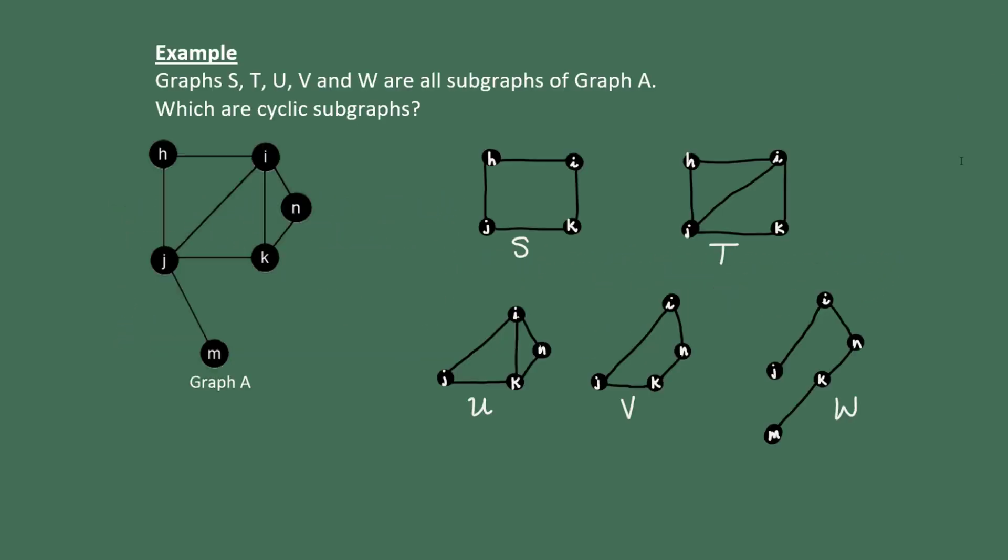Here I've drawn five subgraphs of graph A. Graphs S, T, U, V, and W are all subgraphs, but not all of them are cyclic. Let's figure out which are cyclic subgraphs.